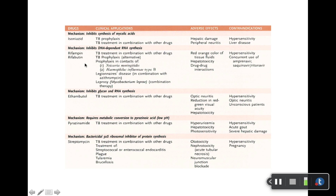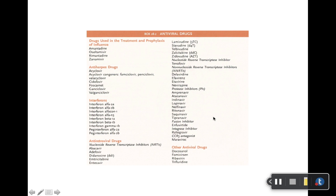Here's a good summary table. Rifabutin is lumped together with rifampin because they're very similar other than the drug interaction concern. Look at the clinical applications and the adverse effects and contraindications. Note that streptomycin is no longer first line — it's just the RIPE drugs. Please remember the adverse effects.